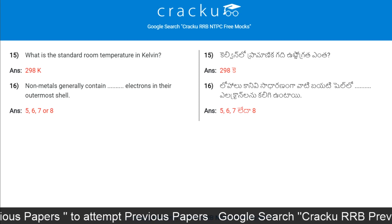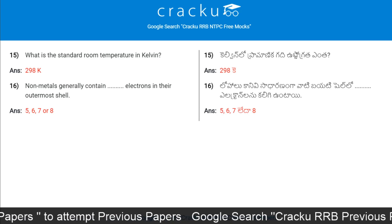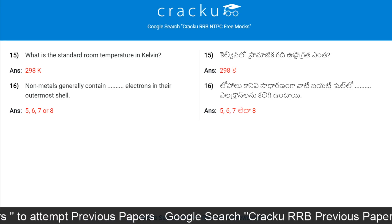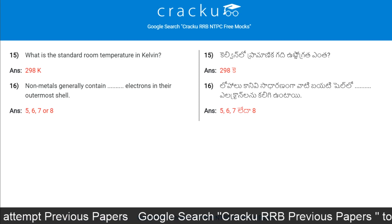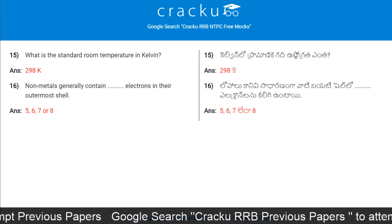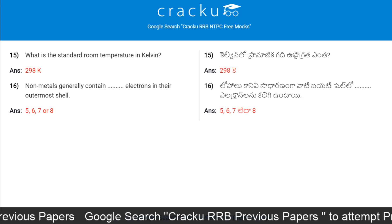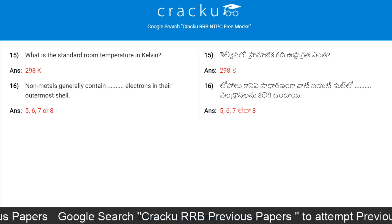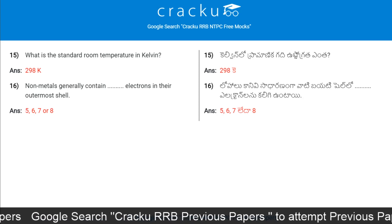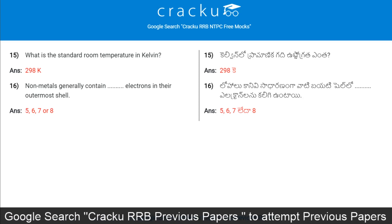Non-metals generally contain how many electrons in their outermost shell? The answer is five, six, seven, or eight.